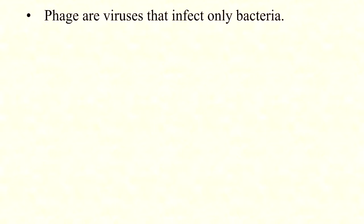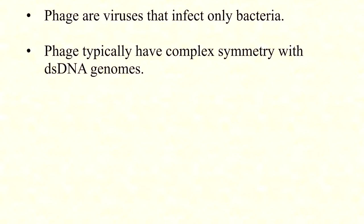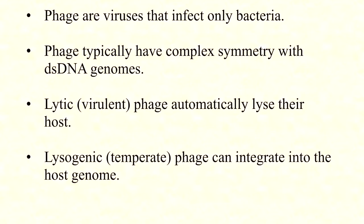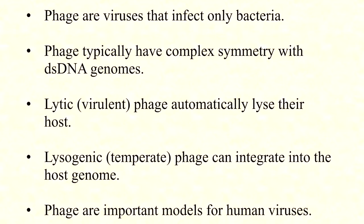Quick lesson summary: phage are viruses that infect only bacteria, typically with complex symmetry and double-stranded DNA genomes. Virulent or lytic phage automatically lyse their host cell. Lysogenic or temperate phage have the option to either lyse their host cell or integrate their chromosome into the host cell chromosome. Phage are also important models for understanding human viruses, and in an upcoming video we'll compare what we know about phage mechanisms to similar processes in human viruses.